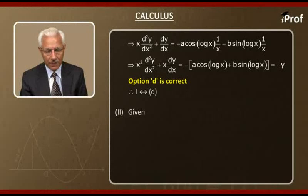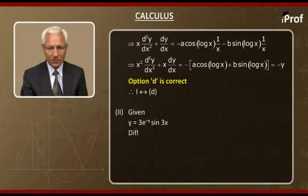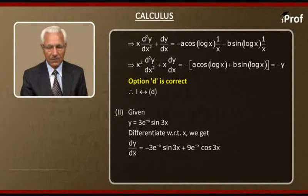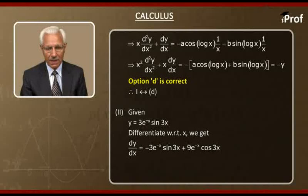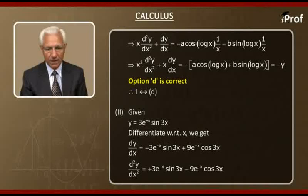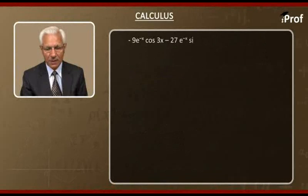Now the second question: y = 3·e^(−x)·sin(3x). Differentiating with respect to x, we get dy/dx = minus 3·e^(−x)·sin(3x) plus 9·e^(−x)·cos(3x). Differentiating again: d²y/dx² gives minus 9·e^(−x)·cos(3x) minus 9·e^(−x)·cos(3x) minus 27·e^(−x)·sin(3x).